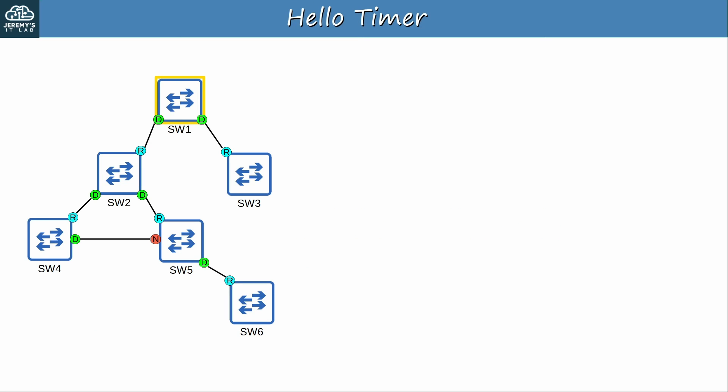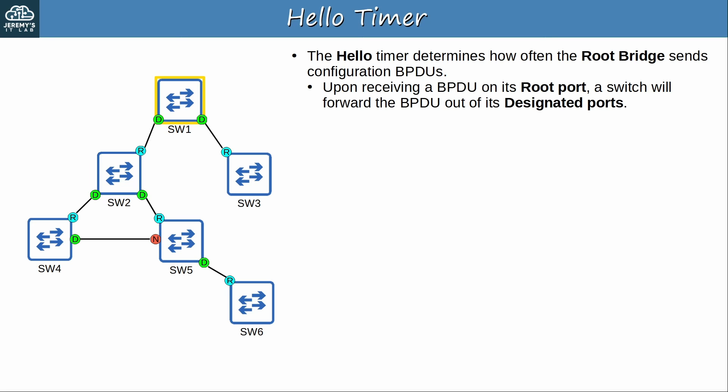Let's look at each timer in more detail. First up the hello timer. It determines how often the root bridge sends configuration BPDUs. In a future video I'll talk about the other type of BPDU, the topology change notification BPDU. Upon receiving a BPDU on its root port, a switch will forward the BPDU out of its designated ports. So the hello timer of the root bridge determines how often non-root switches will forward BPDUs. Like this, BPDUs originate from the root bridge and are propagated throughout the LAN, each switch modifying some parameters of the BPDUs they forward. And then 2 seconds later, the same thing happens again. This happens every 2 seconds by default.